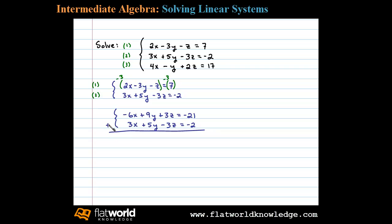So when we add these equations together, we're left with negative 3x plus 14y equals negative 23. Now let's eliminate z again, this time using equation 1 and equation 3.